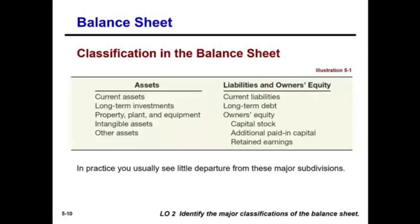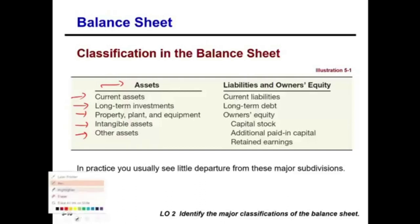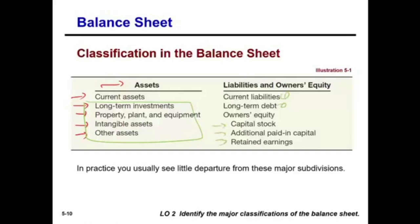Now we're going to look at the classification of the balance sheet. We're going to look at assets: current assets, long-term assets, PP&E, intangible assets, and other assets. These are the five categories companies typically use to report assets. You could also look at them as two categories: current and non-current. Liabilities have two categories: current and long-term. Equity has three main sections. Most companies break down their balance sheets into current and non-current.